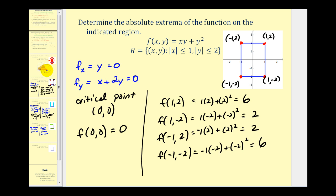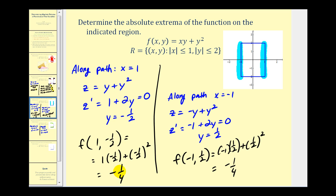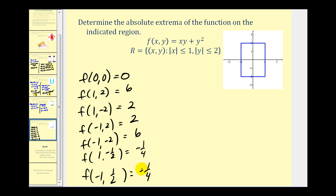To finish up, we consider all the function values collected: zero from the critical point, six, two, two, and six from the corner points, and negative one-fourth and negative one-fourth from the paths x equals one and x equals negative one. The largest value is six, so the absolute maximum is six, occurring at (1, 2) and also at (-1, -2).